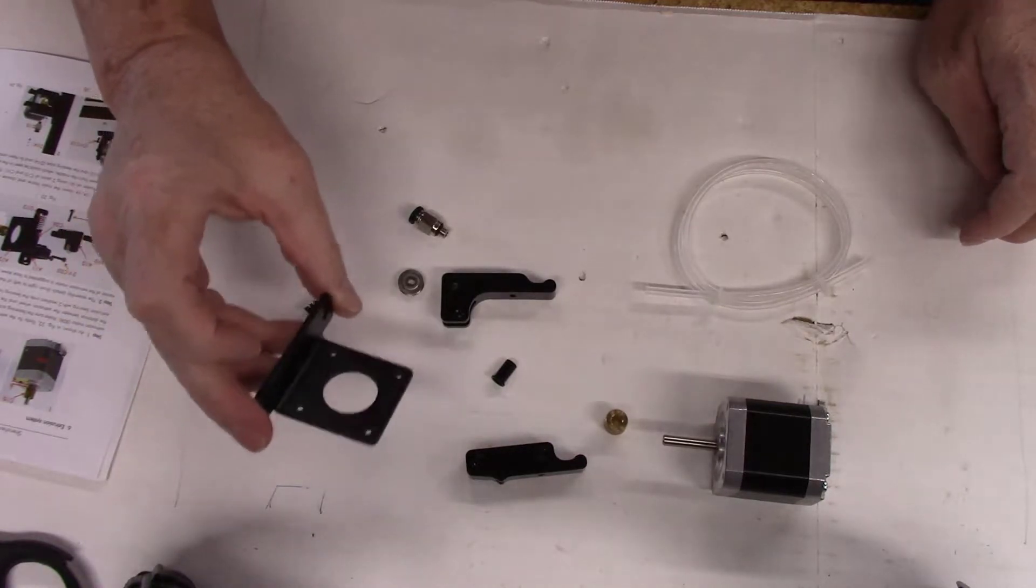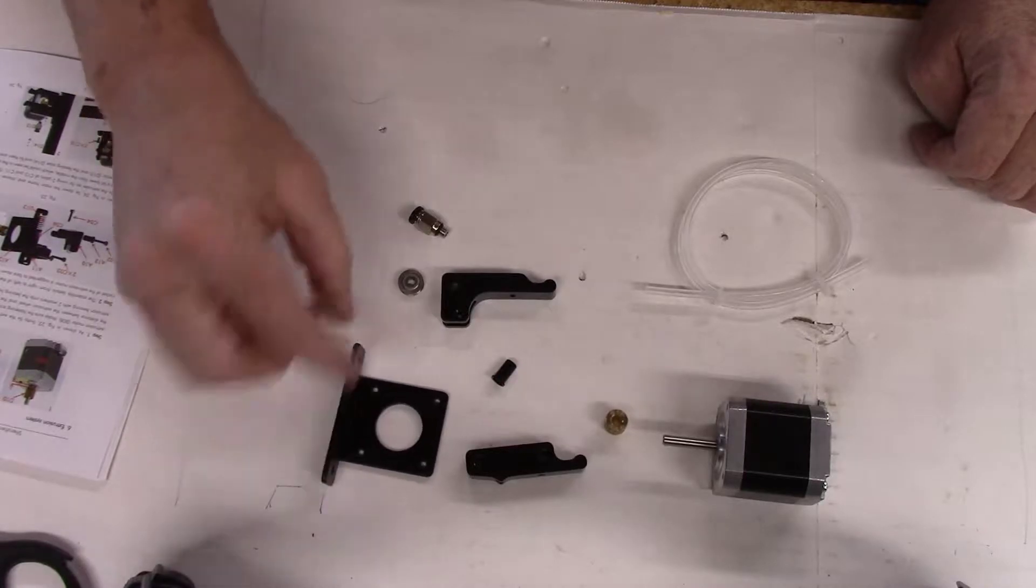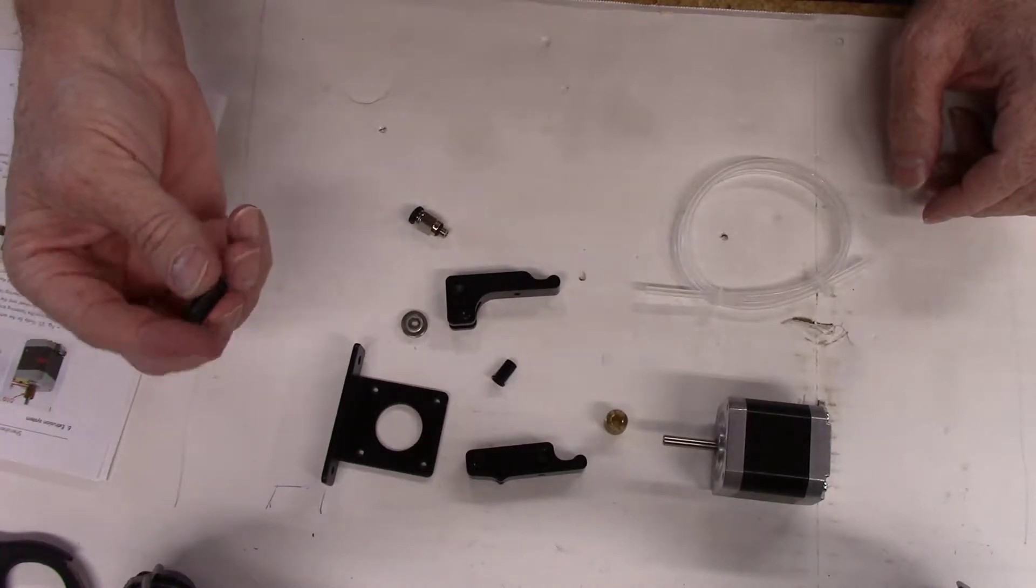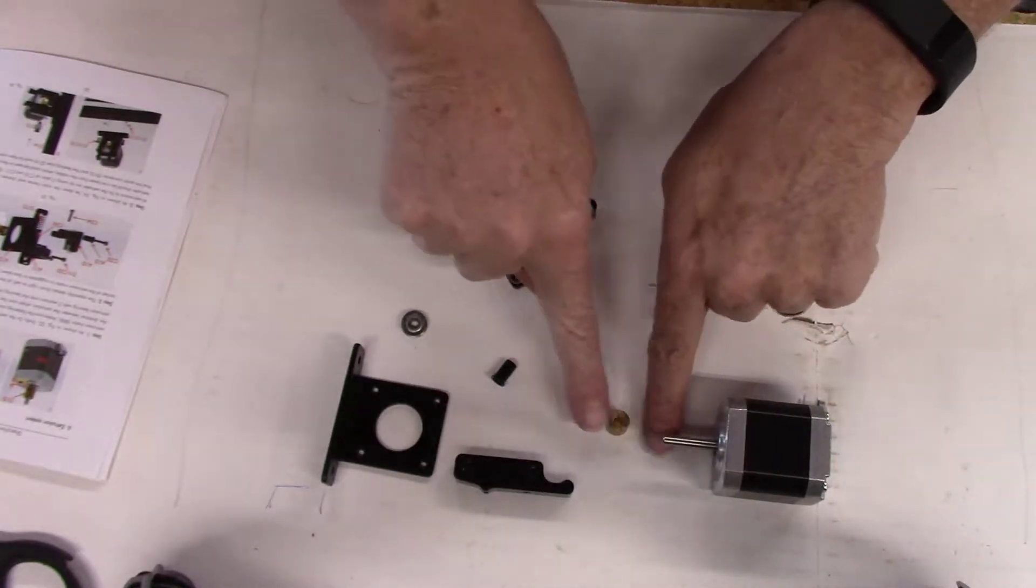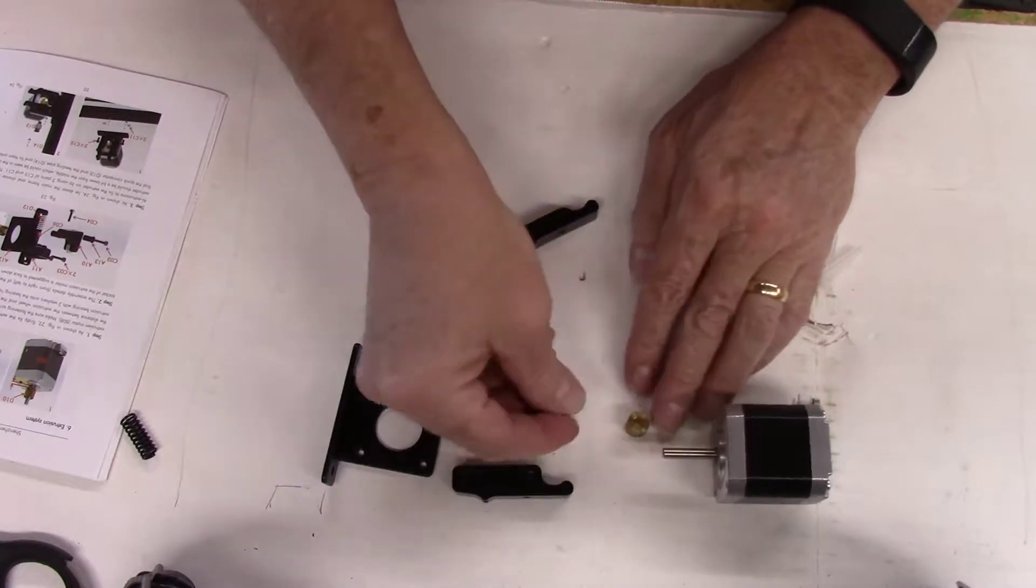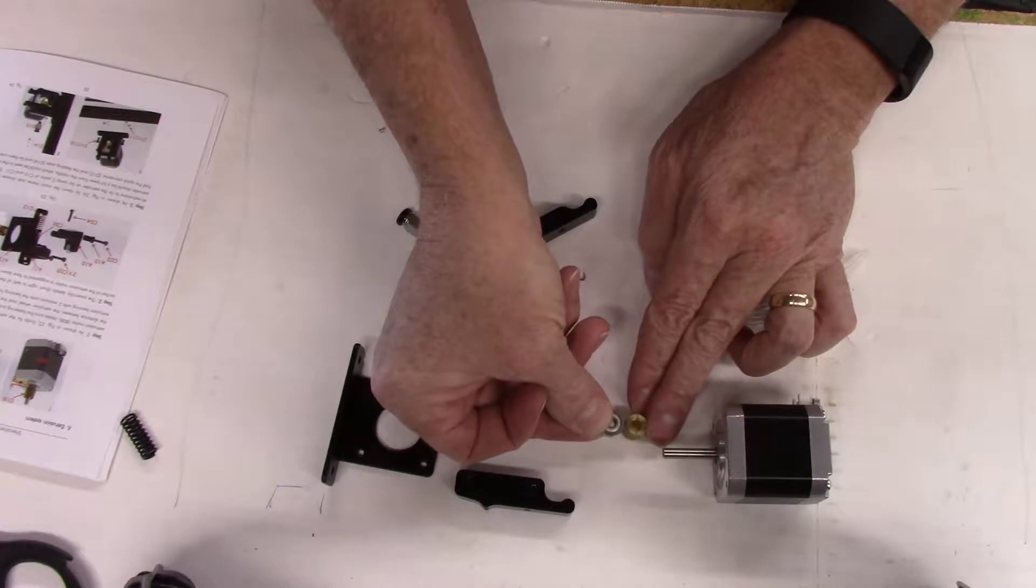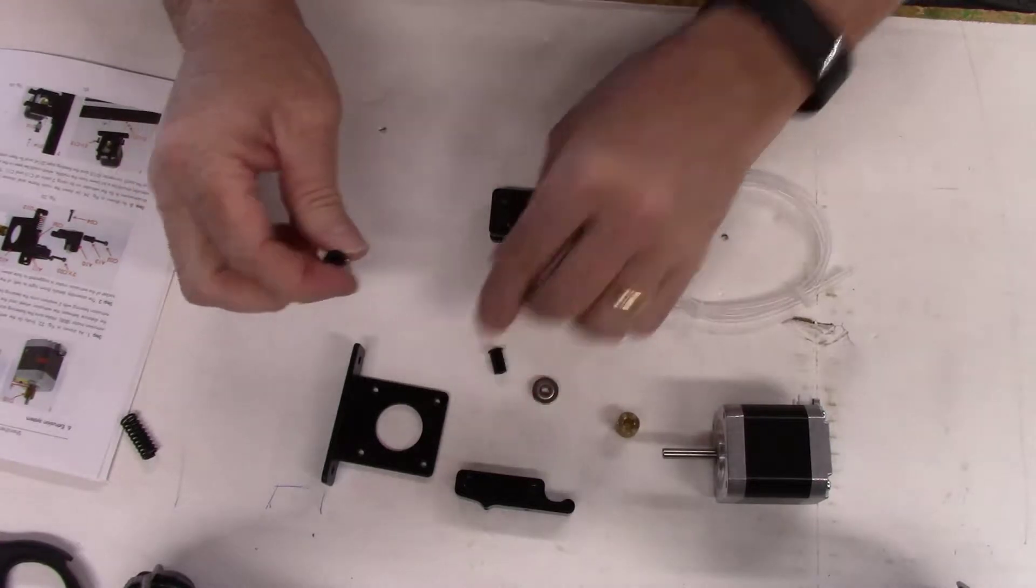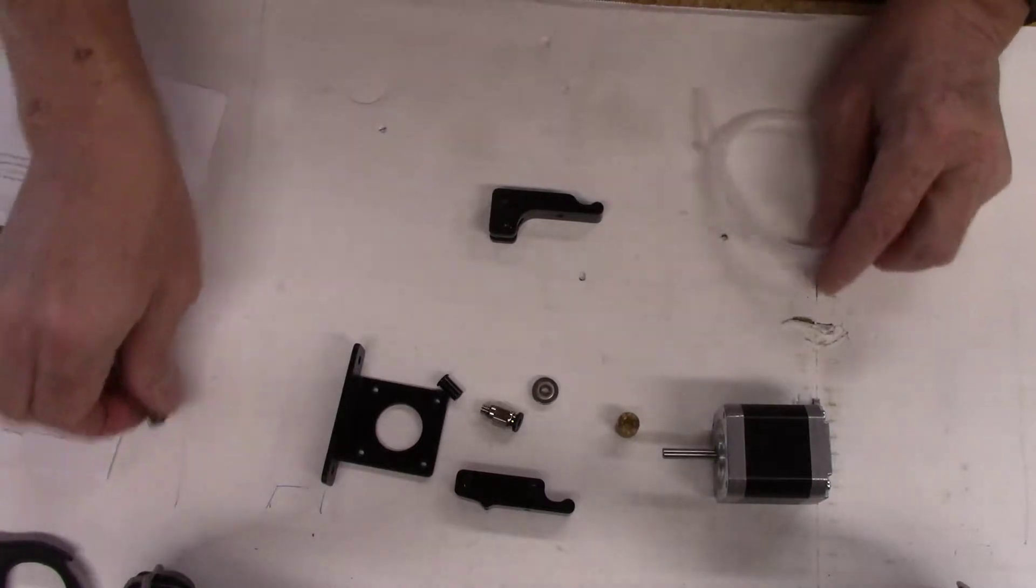I've got a base plate here that mounts to the stepper motor and holds everything to the frame of the 3D printer. This wheel is a guide wheel for the filament. The spring keeps tension on these pieces, which keeps the filament pressed tightly against the wheel. The filament will come up between this wheel and the toothed wheel, and the spring keeps this pushed against here so that the toothed wheel can grab hold of the filament. This is the Bowden tube.